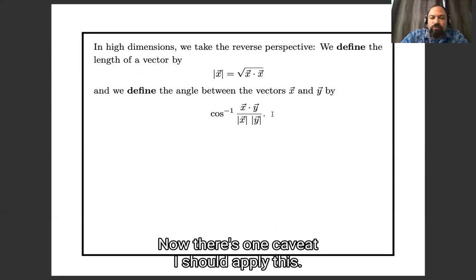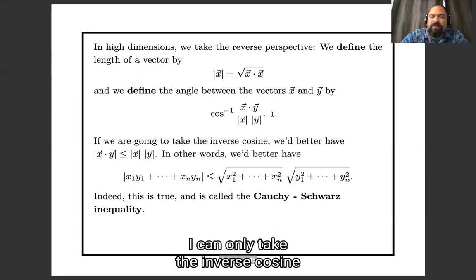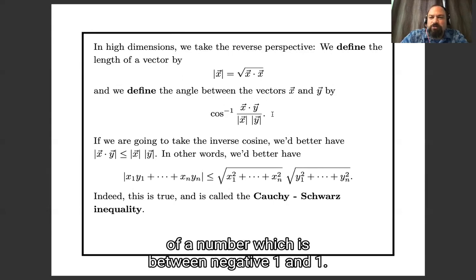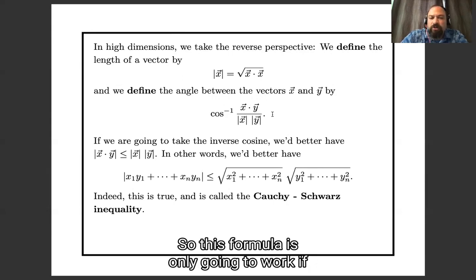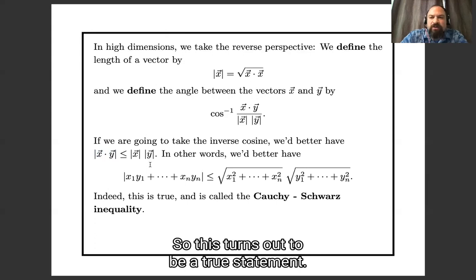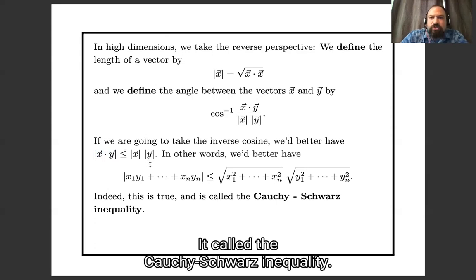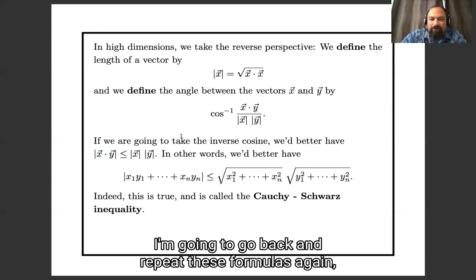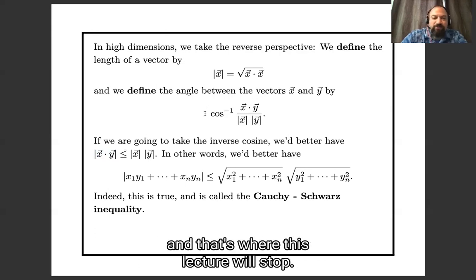Now, there's one caveat I should apply to this. I can only take the inverse cosine of a number which is between negative one and one. So this formula is only going to work if x dot y is bounded by length of x times length of y. So this turns out to be a true statement. It's called the Cauchy-Schwarz inequality. And for those who are curious, I'm going to prove it for you now. And then after that, I'm going to go back and repeat these formulas again. And that's where this lecture will stop.